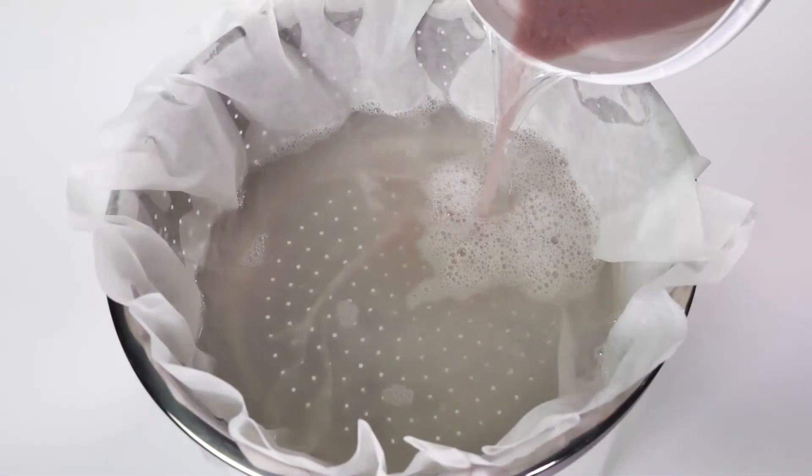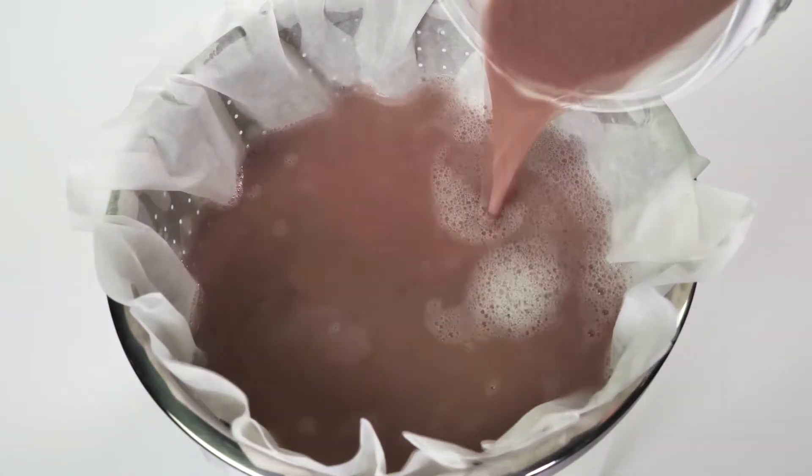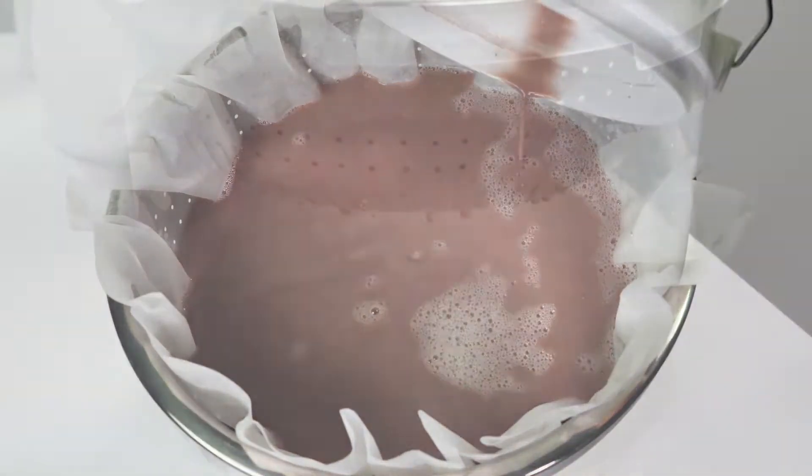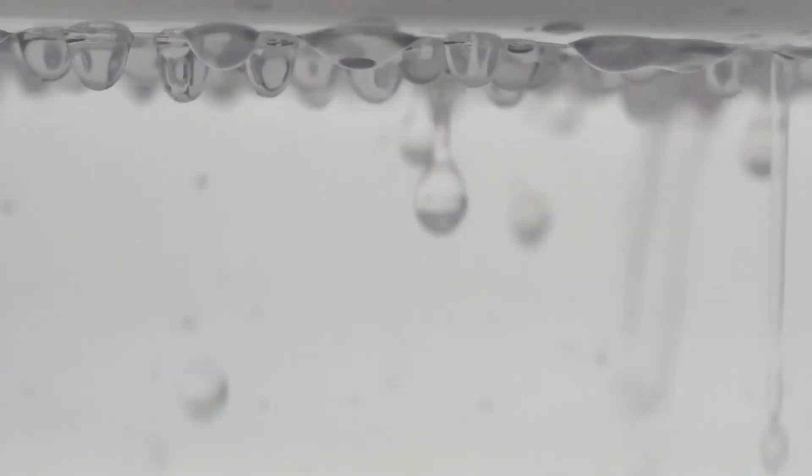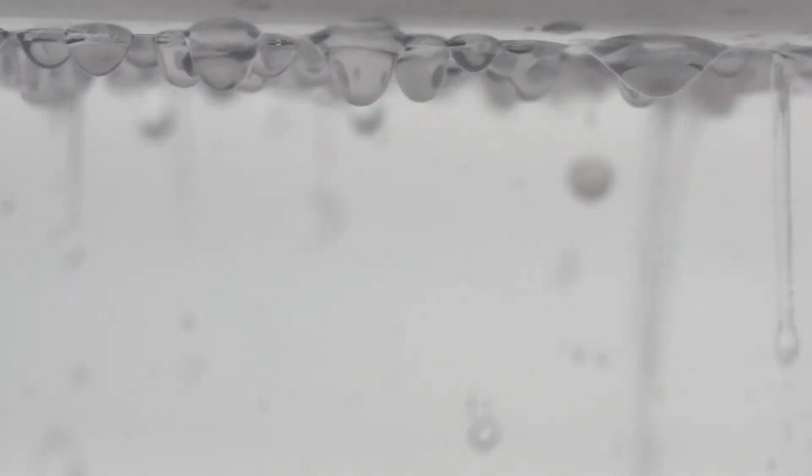Carefully pour the entire bucket of your treated wastewater into the paper filter. As the paint solids fill the bottom of the filter, it will take longer for the clean water to pass into the bucket.